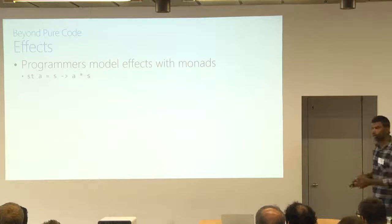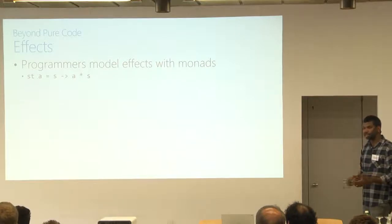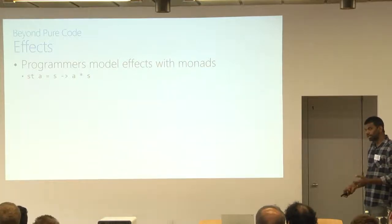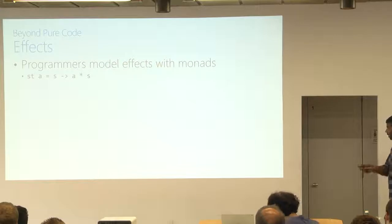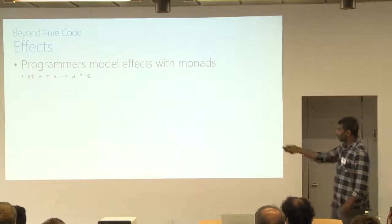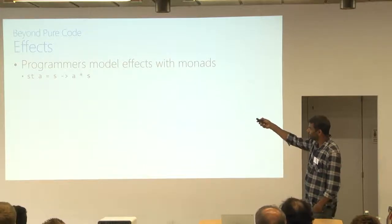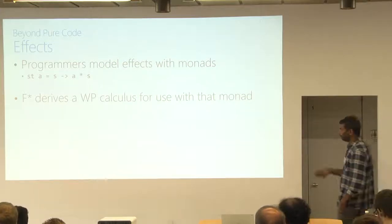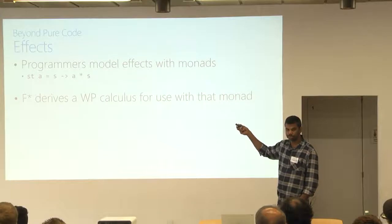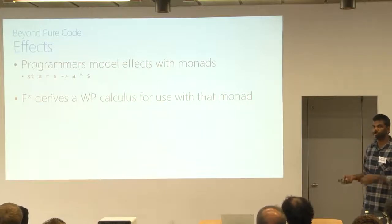So that's factorial is a pure program, but F-star, one of its main features is that it allows the core language to be extended with effects. And the basic idea is probably familiar to you from Haskell or other functional programming languages. At the core, you get to define, you get to encode effects in F-star using monads. So here's a state monad, as you'd expect. St of A is a function from states to results cross states. But the interesting thing is that given such a monadic signature, F-star can derive for that monadic signature a weakest precondition calculus suitable for use with that monad.